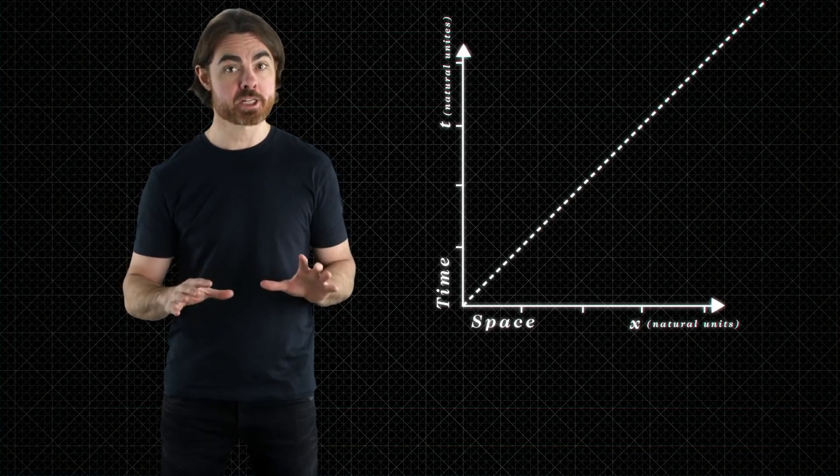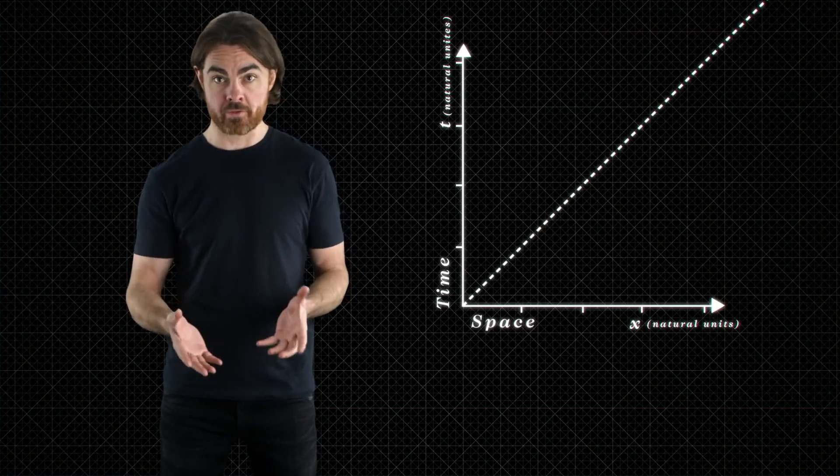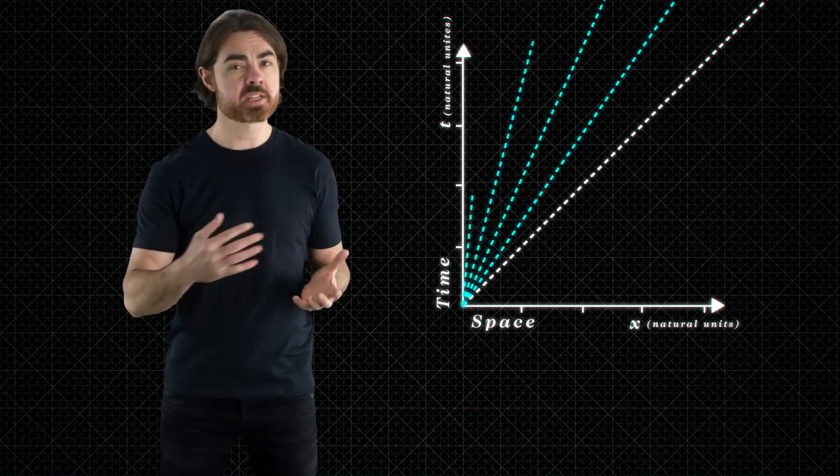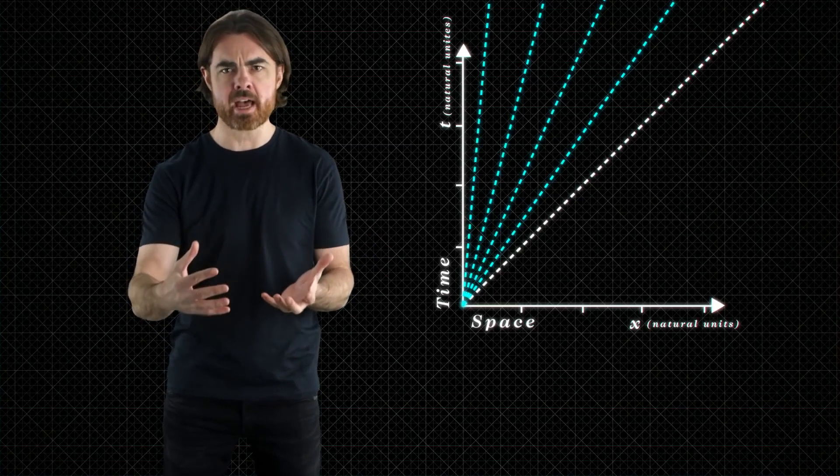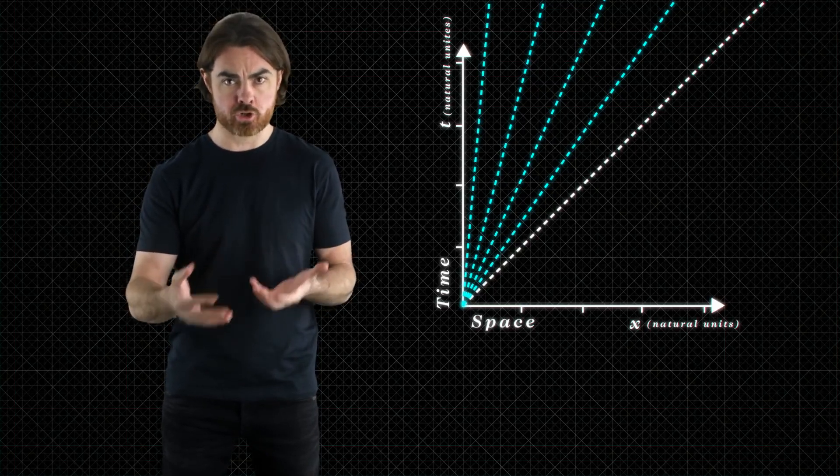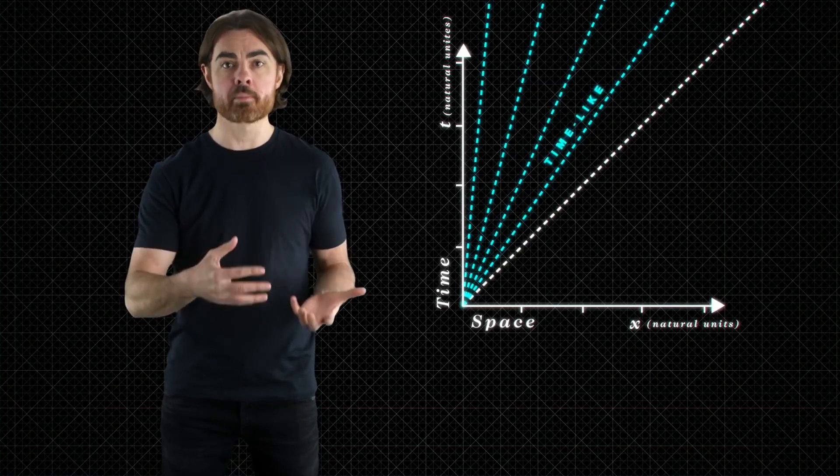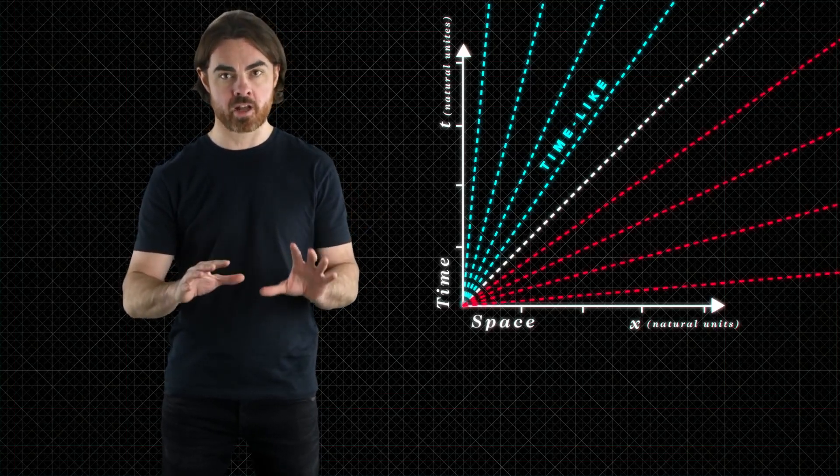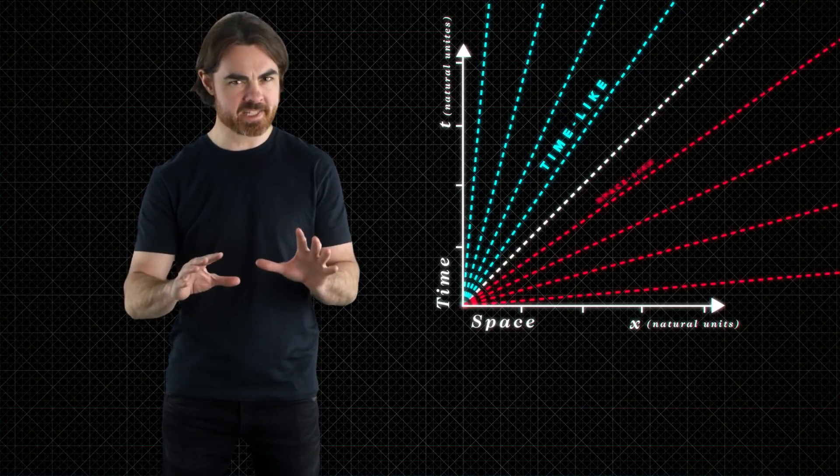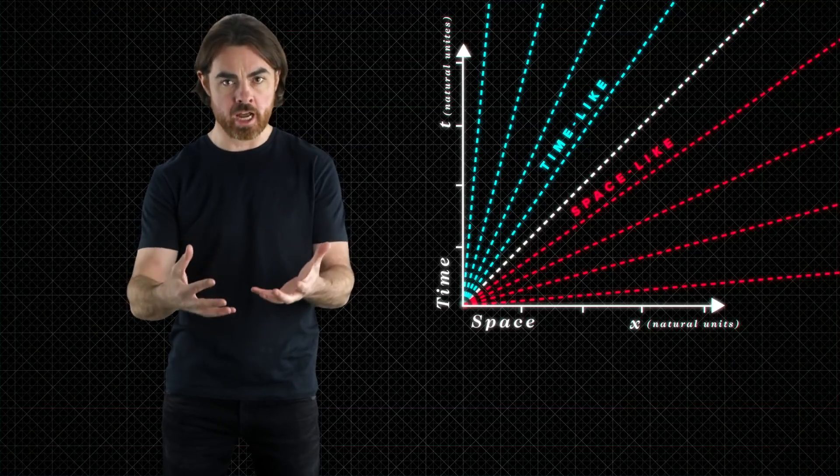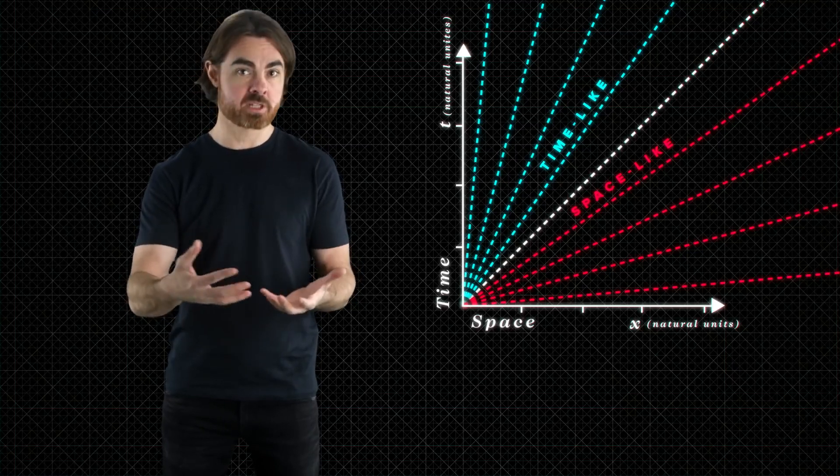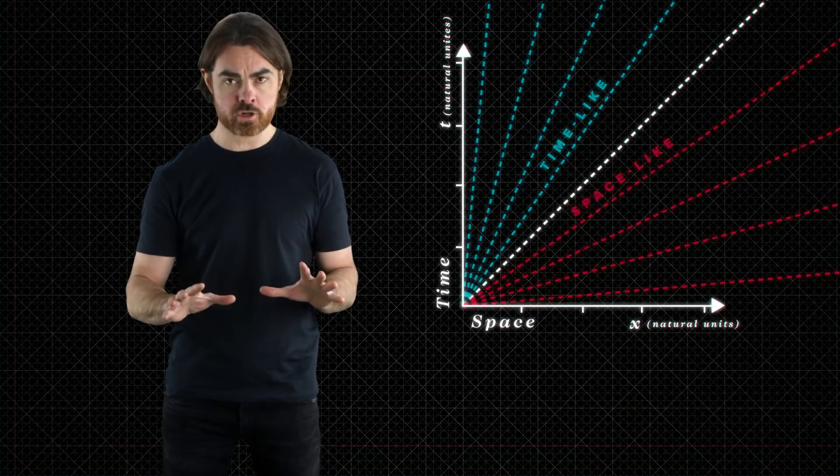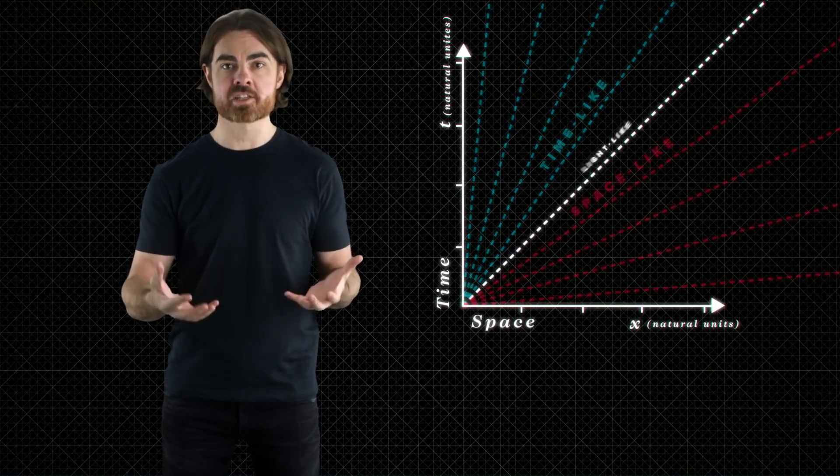So, it's possible for something to travel one of these steeper paths. They're separated more by time than space. Sub-light speed things can travel them, and we call them time-like paths. These would be impossible faster than light paths. They're called space-like. There's not enough time for anything to travel that much space. And the 45 degree path? That's a light-like path.